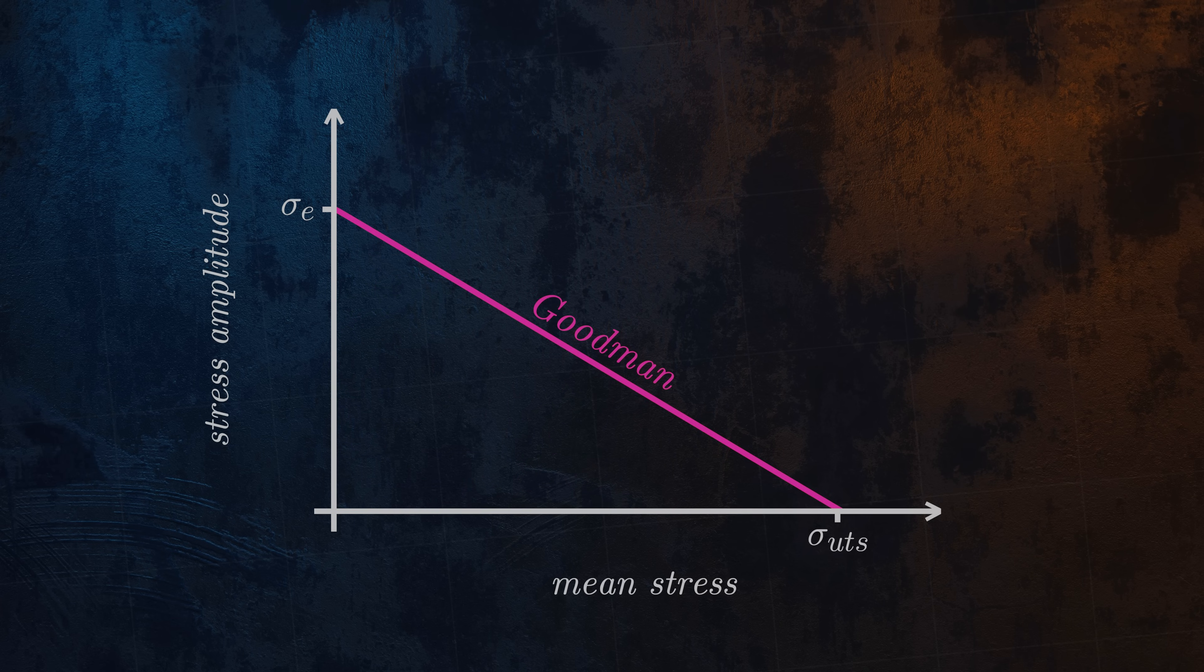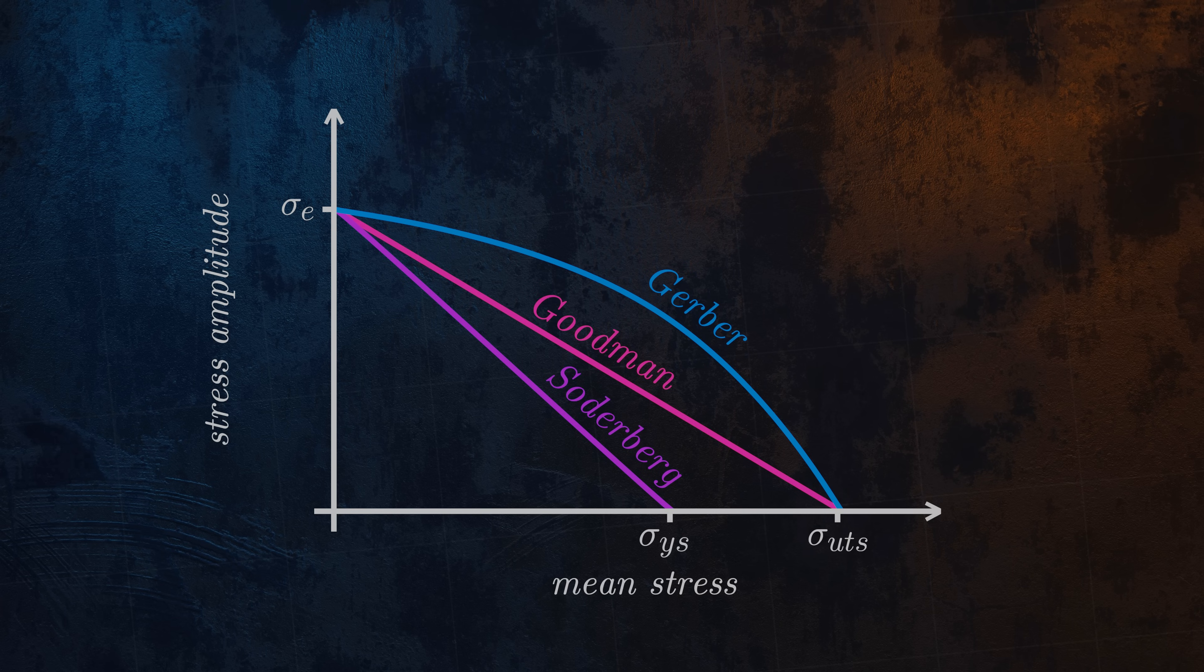There are a few different variations of this diagram, as you can see here. This approach can only be used to determine whether a component will have an infinite life. It doesn't allow us to calculate a fatigue life.